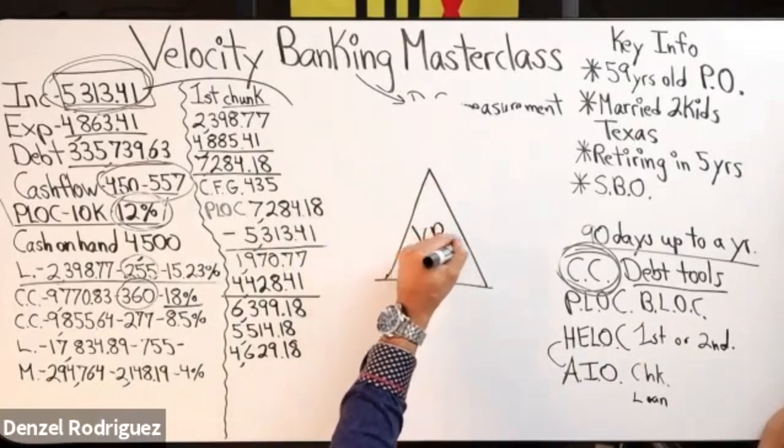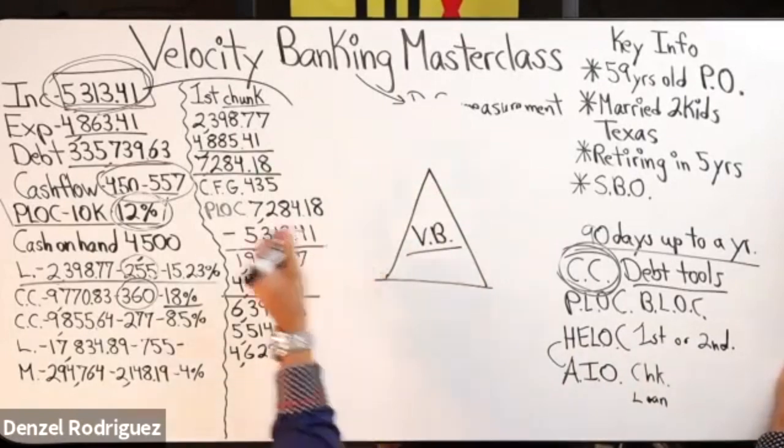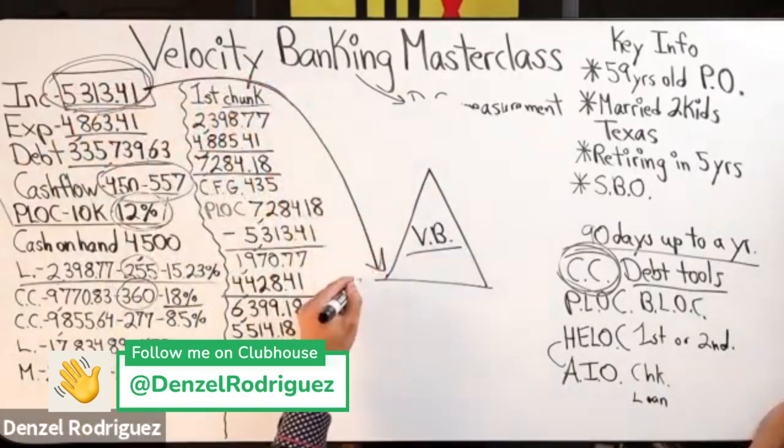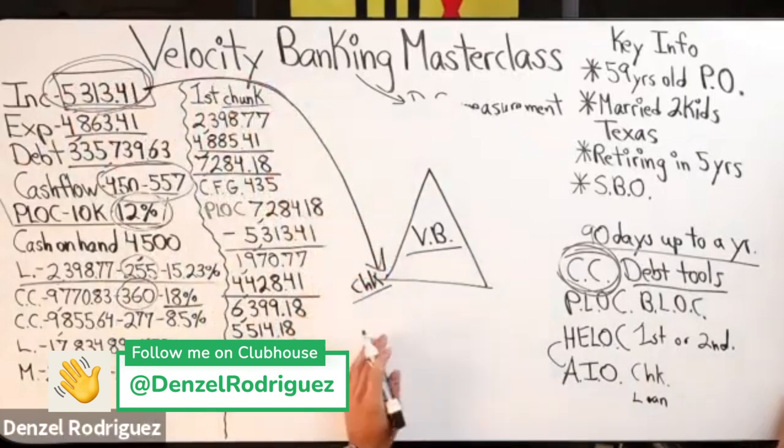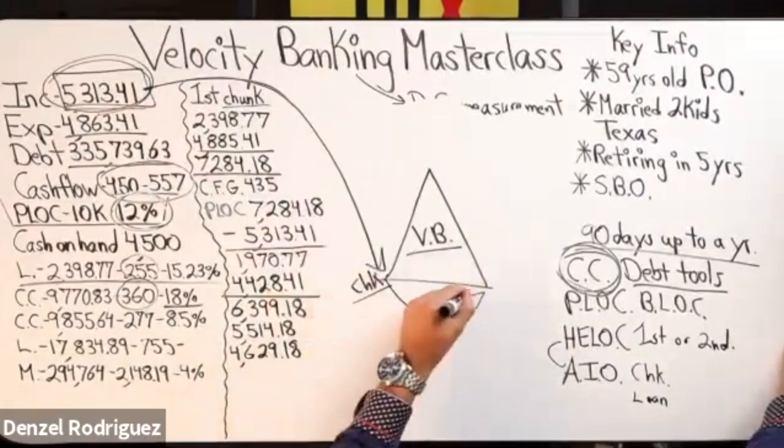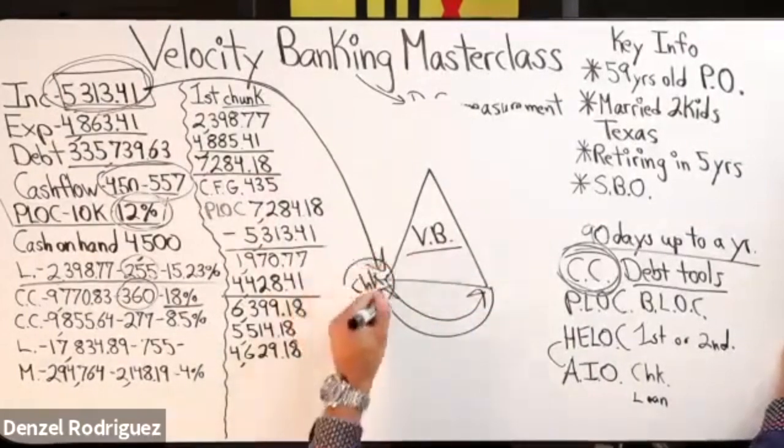This is the velocity banking triangle, not a pyramid scheme. So we got income that comes to - everybody has a checking account nowadays, right? If you don't, oh my god, probably living under a rock. So everybody has a checking account, that's where we receive our income.